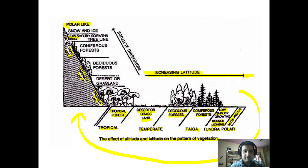The same pattern is followed when moving from lower to higher altitude. At the base we have tropical-like conditions, then desert or grassland at a little higher elevation, then deciduous forest, then coniferous forest, then low shrub growth, after which we reach the tree line — above which no tree can be found. Beyond this point we only have low shrub growth, followed by permanent glaciers, ice, and polar-like conditions at the top. There is a fine correspondence between increasing latitude and increasing altitude in terms of climatic conditions and vegetation patterns.